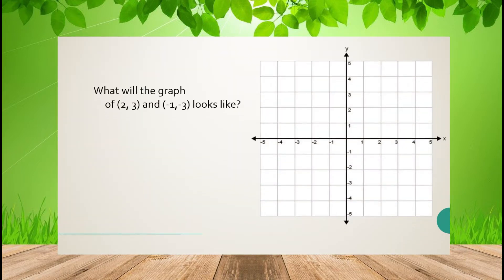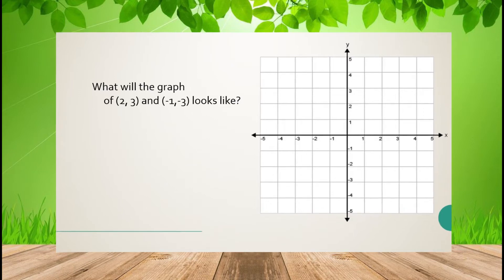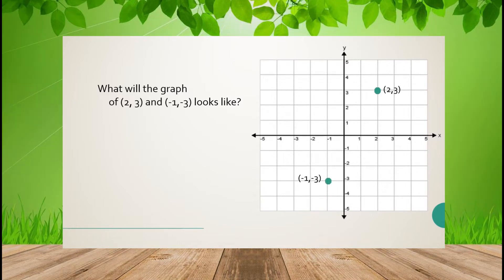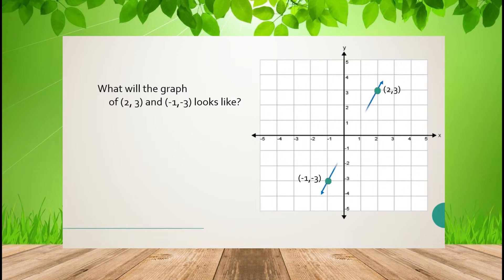What will the graph of (2, 3) and (-1, -3) look like? When we graph (2, 3), the x-coordinate is 2 and the y-coordinate is 3, so the point is in the first quadrant. If we graph (-1, -3), the x-coordinate is -1 and the y-coordinate is -3, placing the point in the third quadrant. Then connect the two points — using two points, you can form a line.